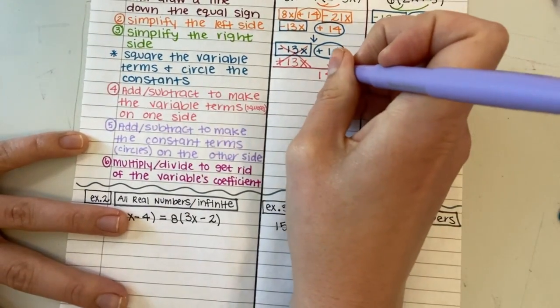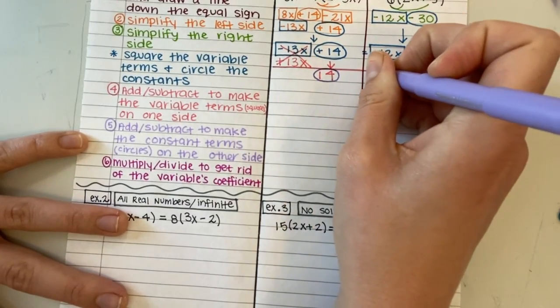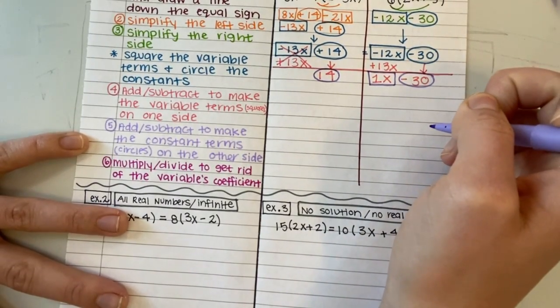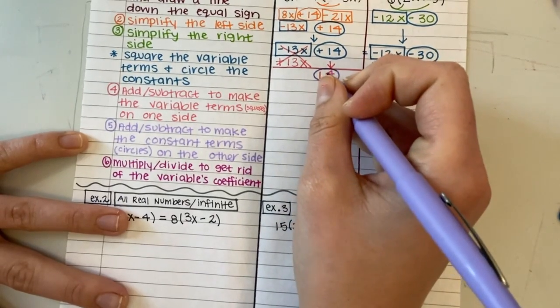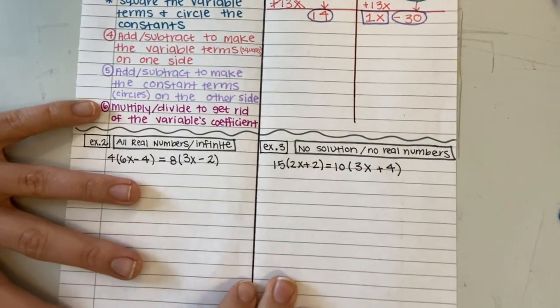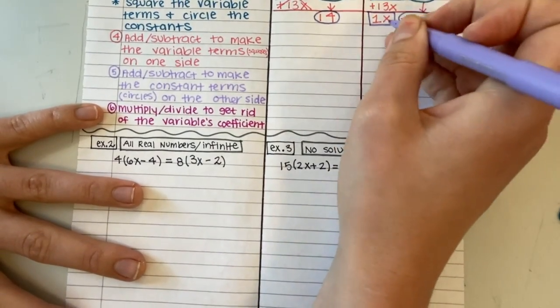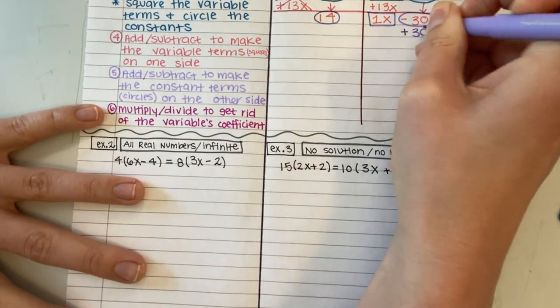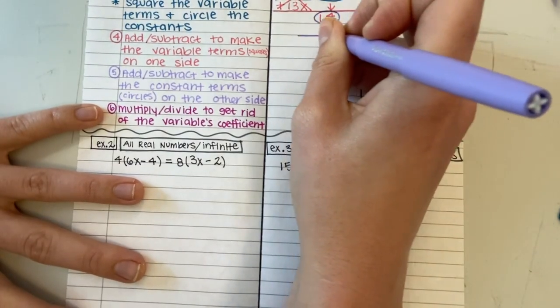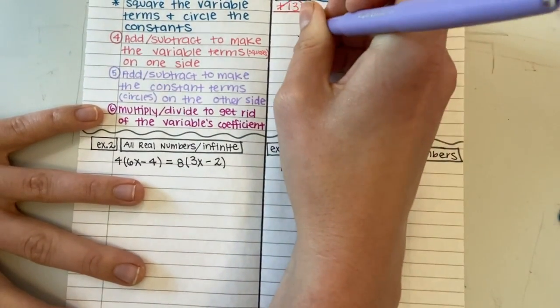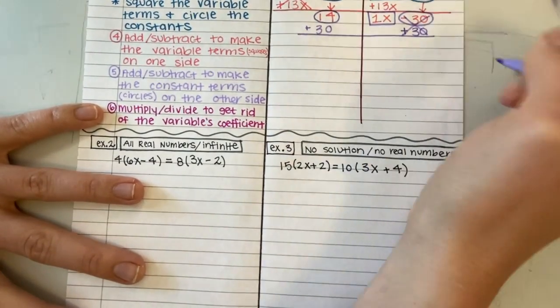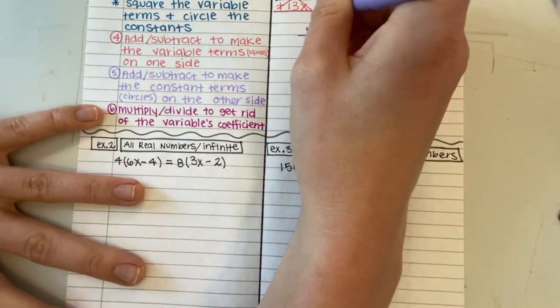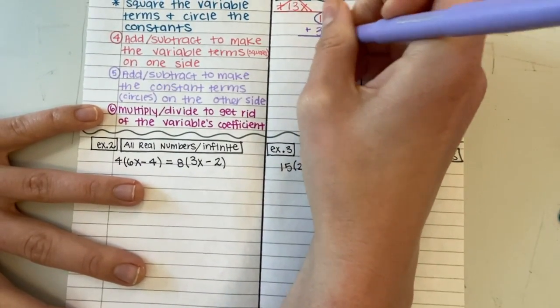Now what I'm going to do is add and subtract to move the circles to be on the other side. Right now I have a circle on this side by itself, so my constant is by itself. But I have a constant sharing a side with a variable right now. We don't want that. So I'm going to add 30 to get rid of this minus 30. If I do that to this side, I have to also do it to this side. Minus 30 and plus 30 cancel out. I'm going to bring down my 1x. 14 plus 30 is 44.